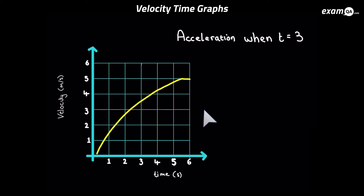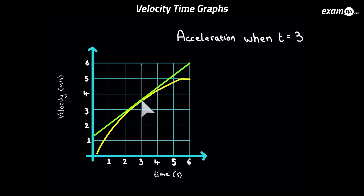Here we've got another velocity-time graph, but this graph is curved. With a curved graph there's no set gradient — every part has a different steepness, so every part has a different acceleration. We want the acceleration when t = 3. To do that on a curved graph, we go to t = 3 and draw a tangent at that point. We then work out the gradient of this tangent, which gives us the gradient — hence the acceleration — at t = 3. So we need to choose two nice coordinates on this tangent line.